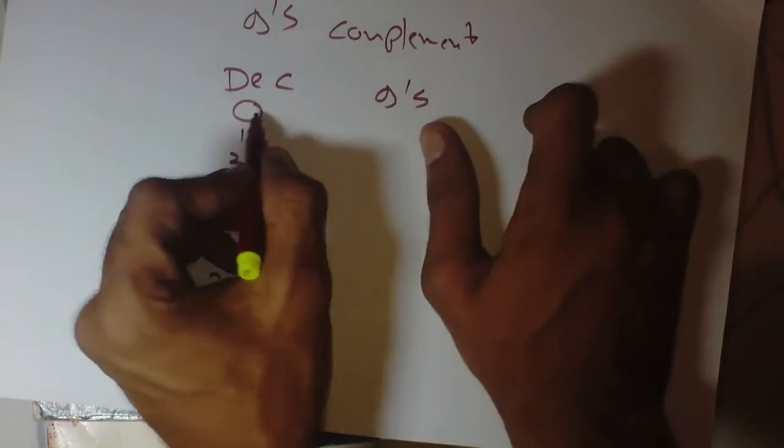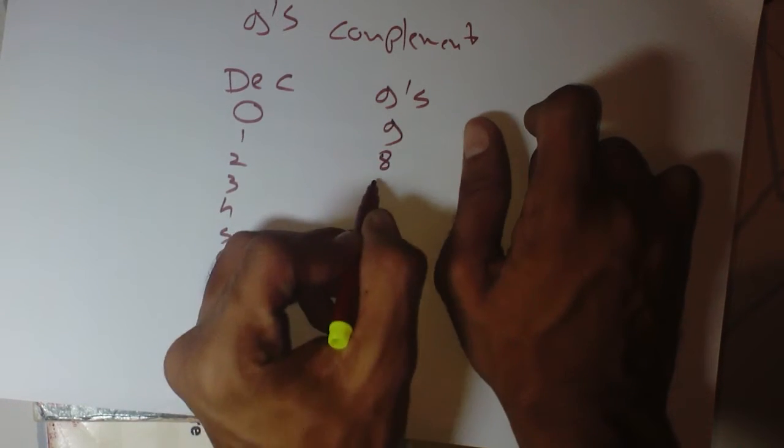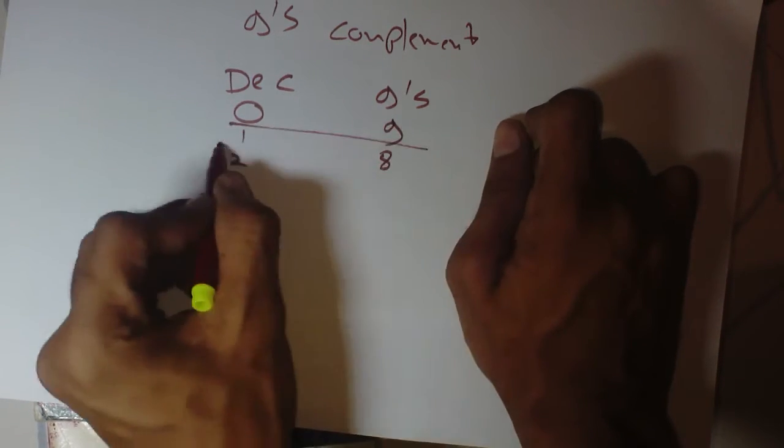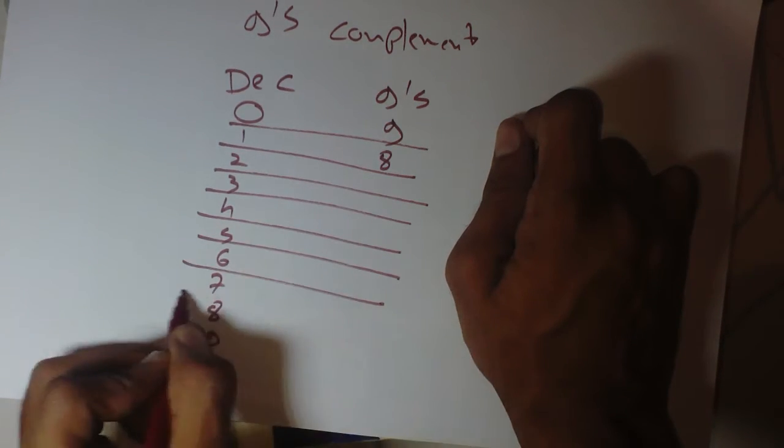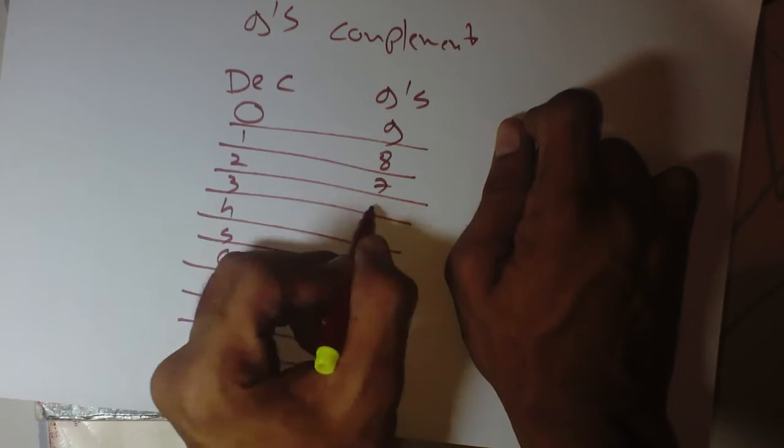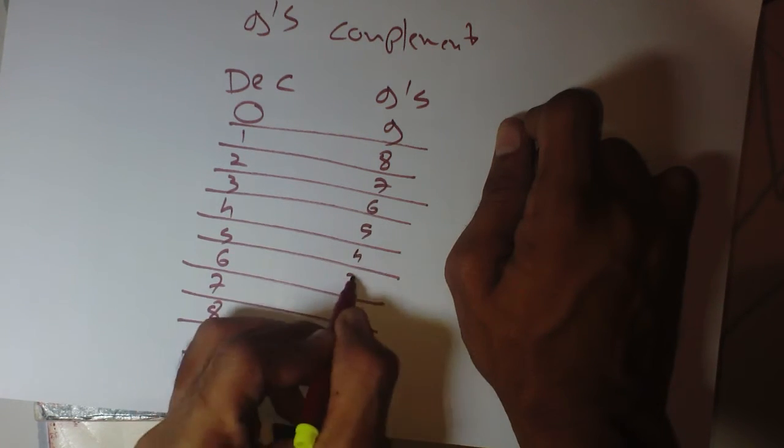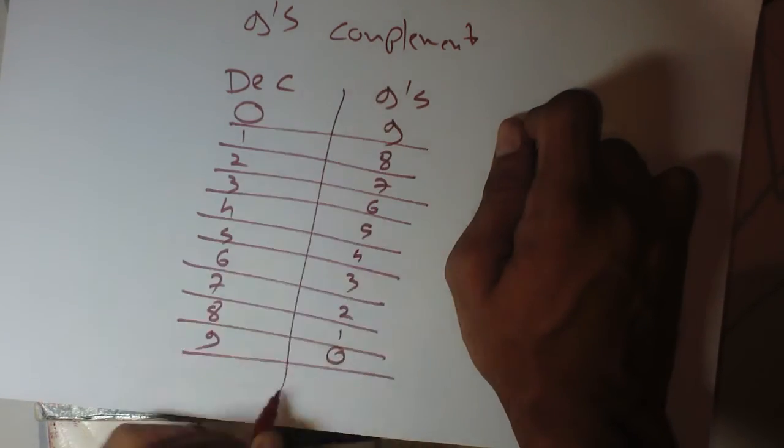So 9 minus 0 means 9, 9 minus 1 means 8, and sorry for bad handwriting, 9 minus 2 is 7, 6, 5, 4, 3, 2, 1, and 9 minus 9 is 0.